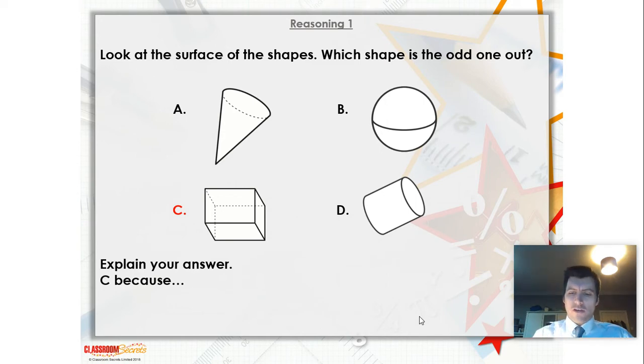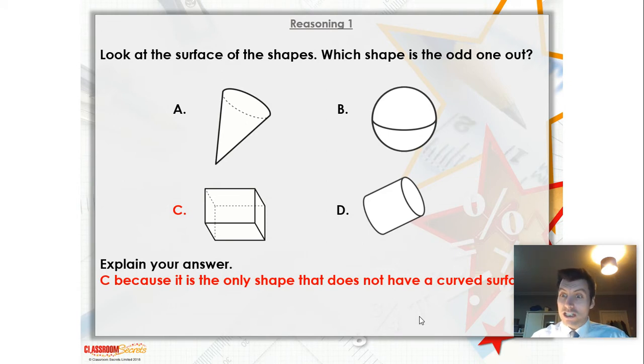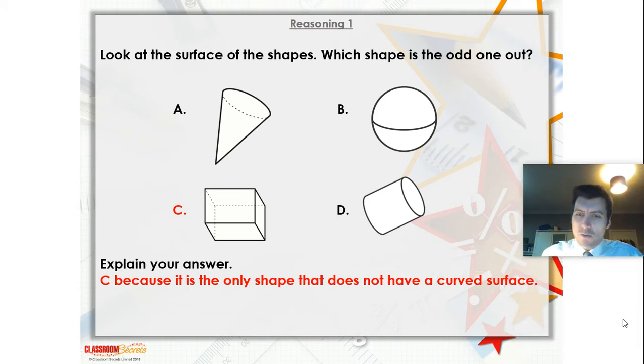Okay guys, hopefully you've spotted that. It's the only shape that doesn't have any curved surfaces. Sorry, I'm in the way of your answer. It's the only one that doesn't have curved surfaces. So our cone for A, our sphere for B, and our cylinder for D, all have curved surfaces. Whereas C only has flat faces. Only has flat faces. Okay guys, we'll move on now.